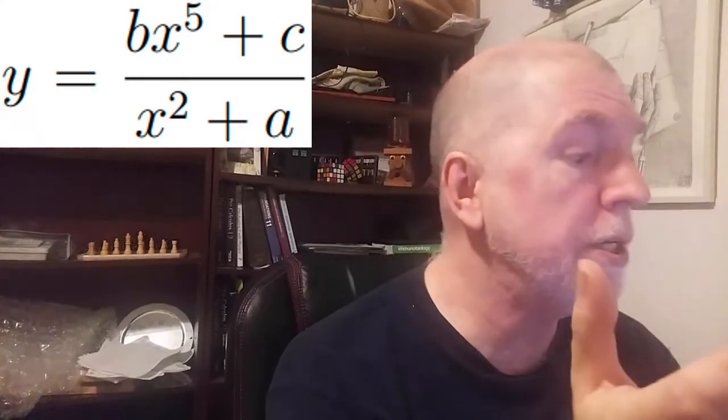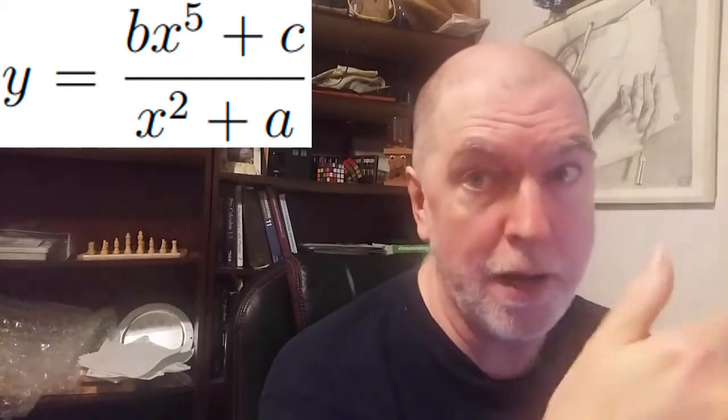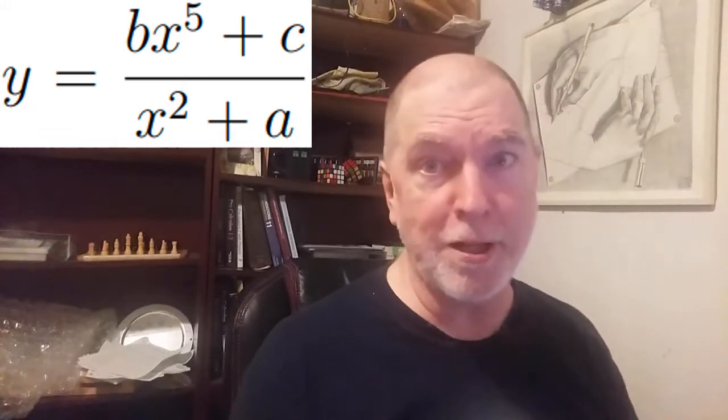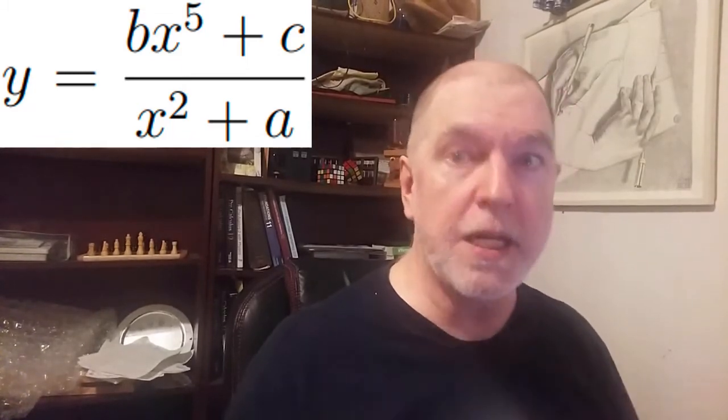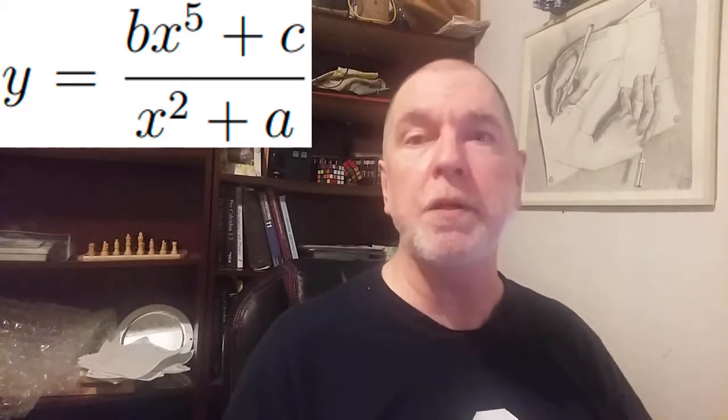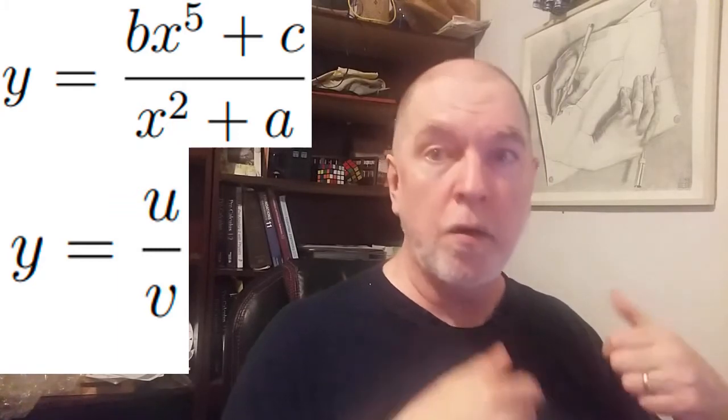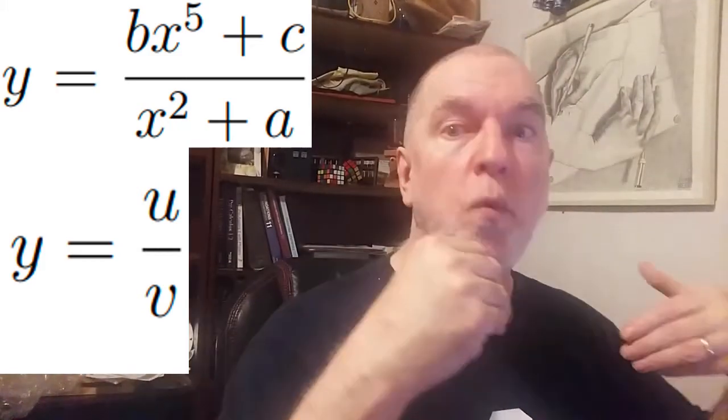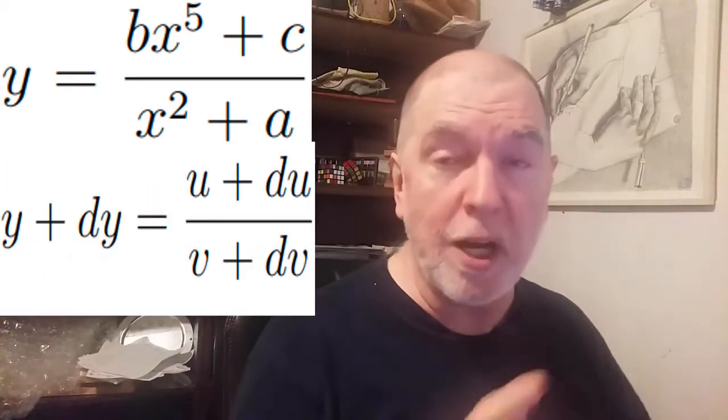Finally, we're going to deal with quotients. So let's look at this quotient of y equals b times x to the fifth plus c divided by x squared plus a. Now, whereas with multiplication, there was a first method we could multiply. But what are we going to do to divide all these? So instead, we're going to go straight to first principles. y equals u divided by v, where y, u, and v are all functions of x. And as we're used to, we adjust u by a small amount du, v by a small amount dv, and y by a small amount dy.